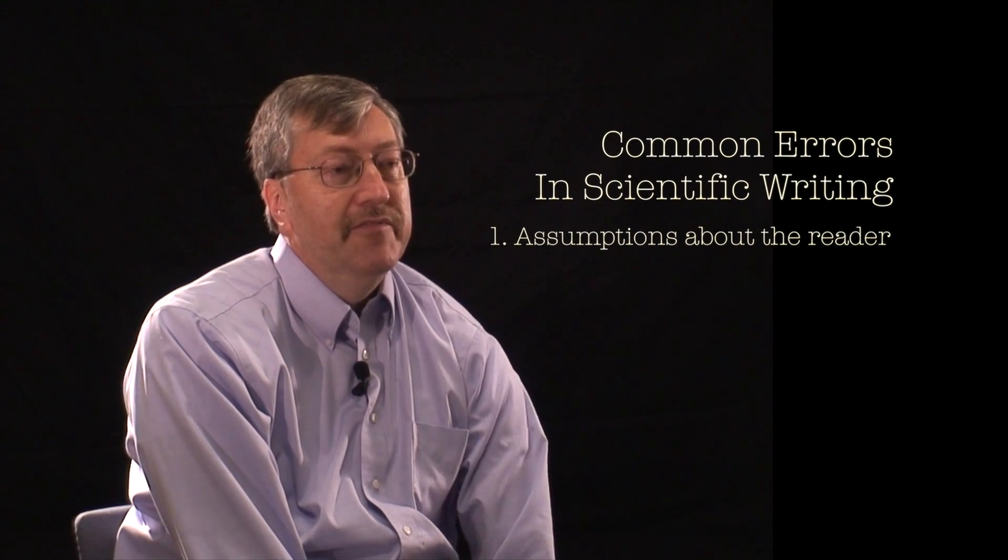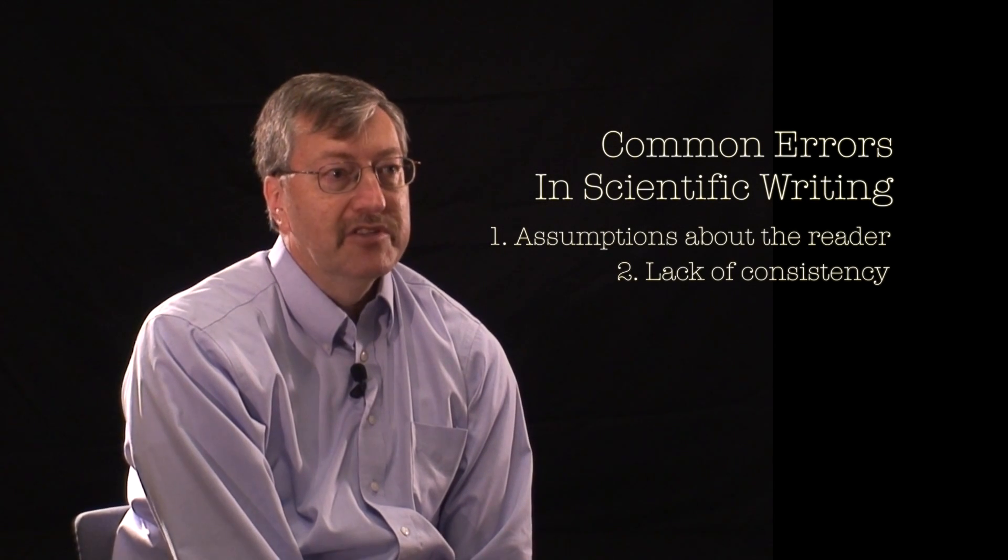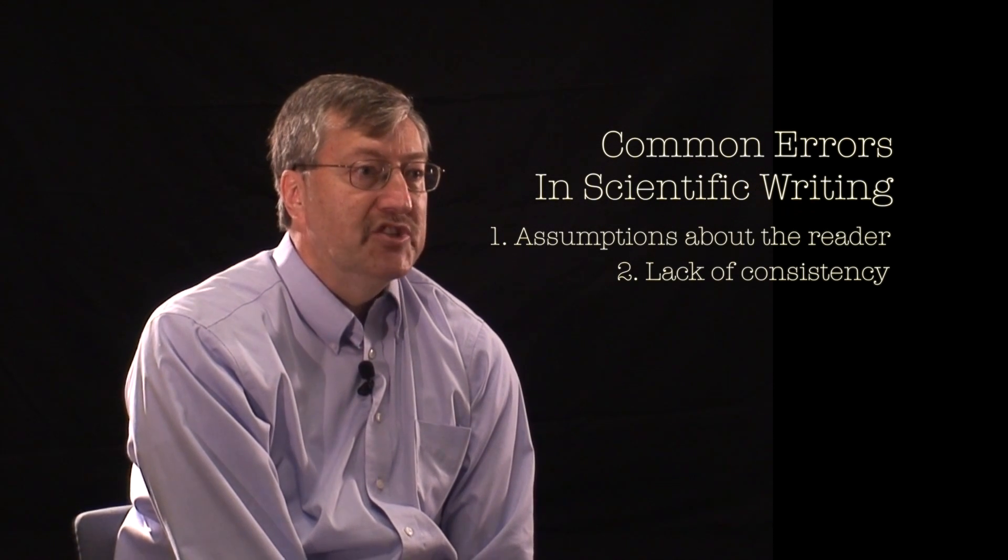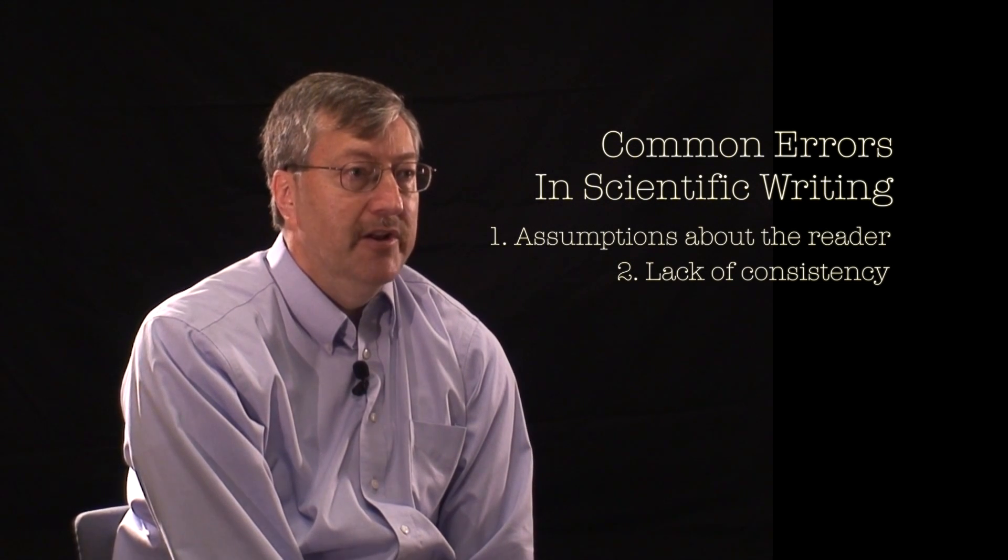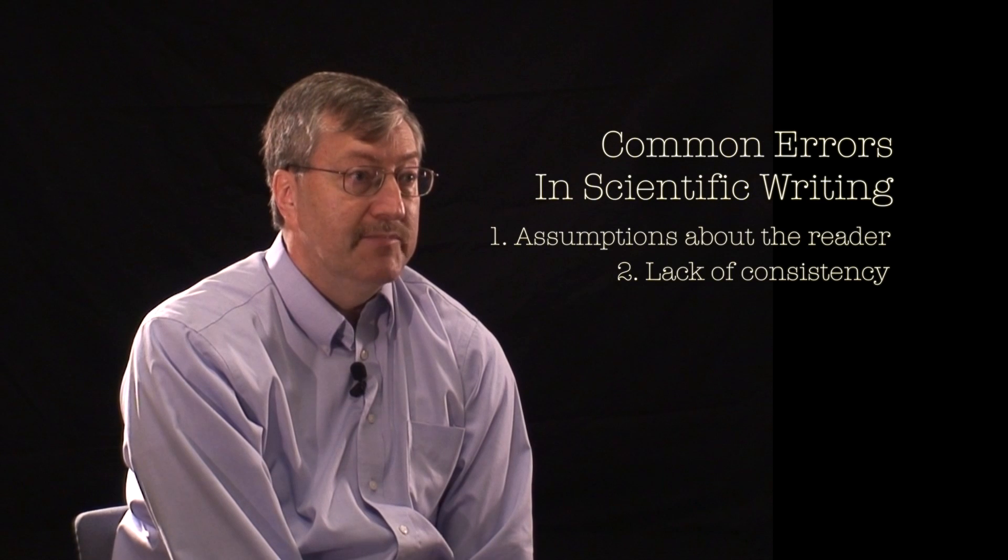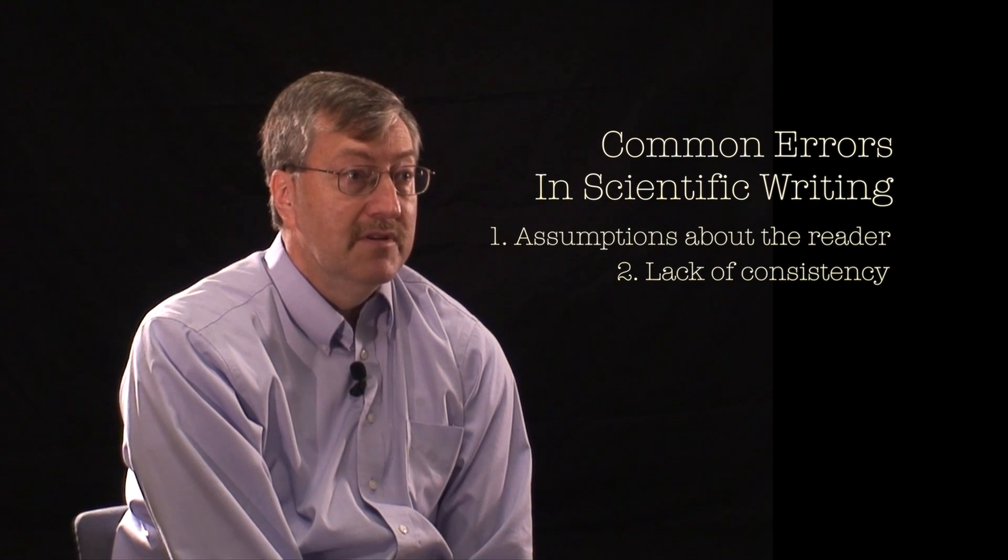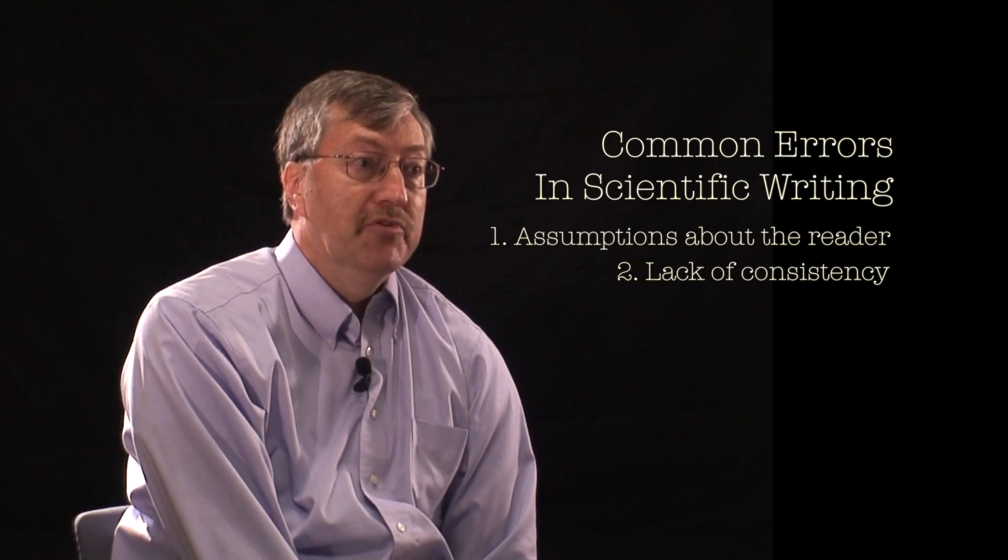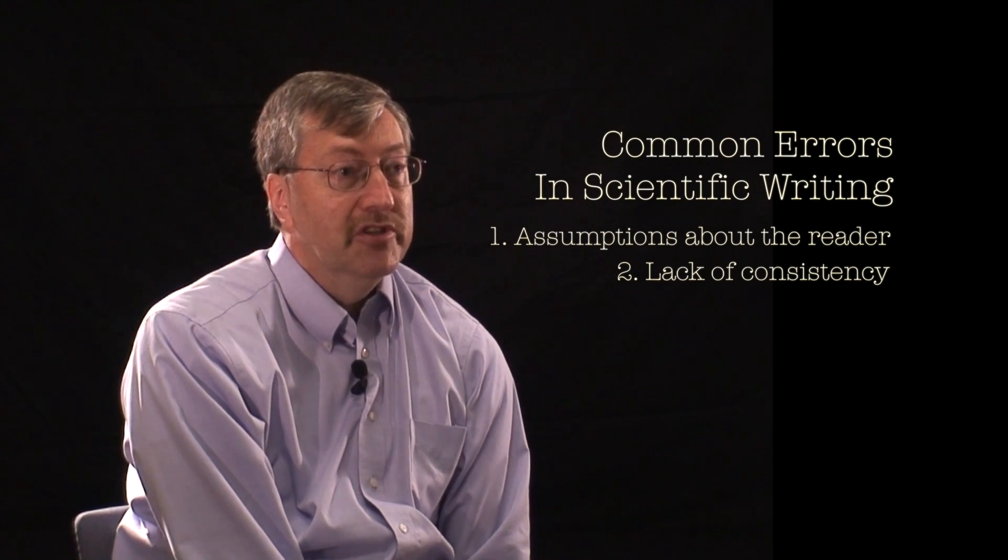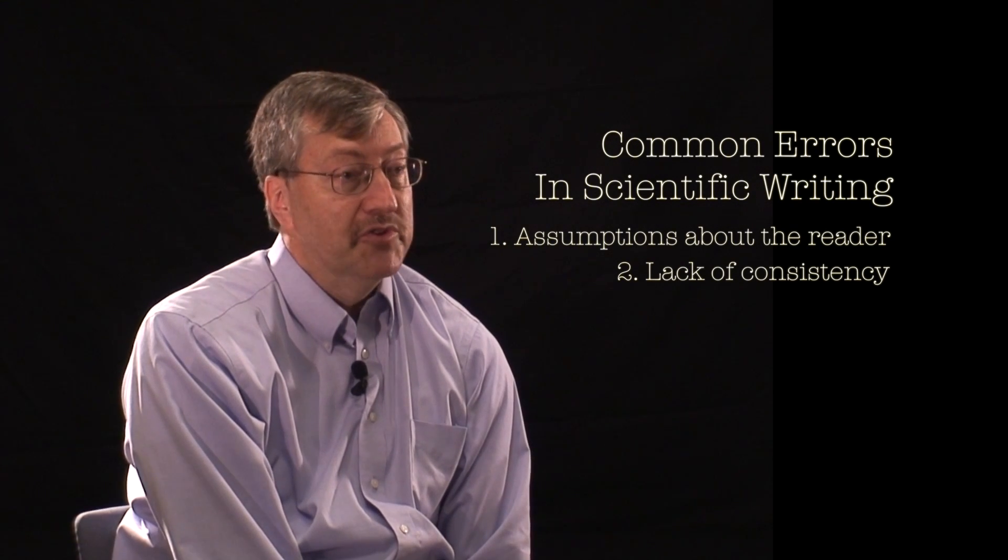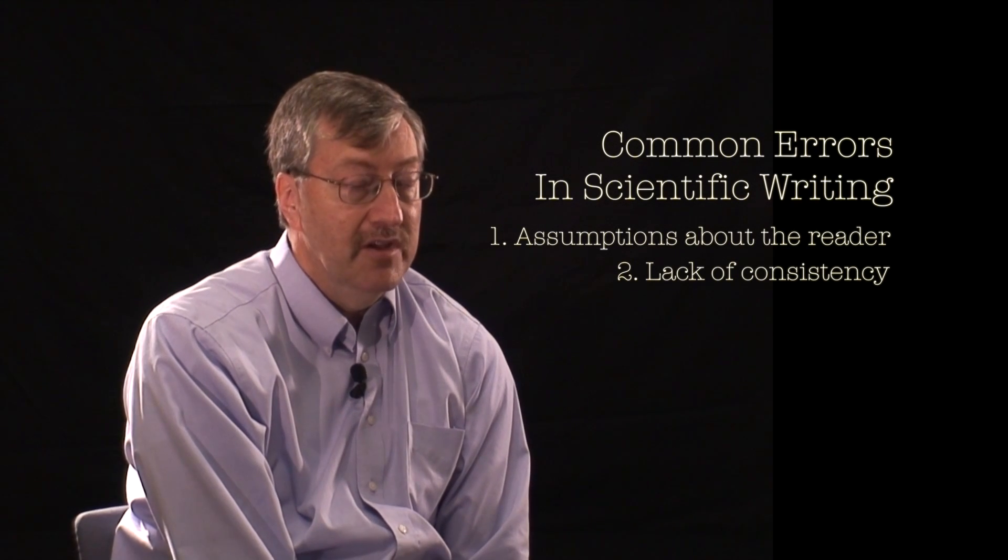The second mistake that authors sometimes make is that there's a lack of consistency between the various sections of a paper. An author needs to make sure that a title is clear, that the terms and keywords used in the title are the same as those used in the abstract and are the same as those used in the introduction and the remainder of the paper. The message needs to be consistent throughout the paper as well. The question that an author asks in the introduction needs to be answered somewhere in the results or the discussion. That's another area where authors sometimes fail to achieve consistency.